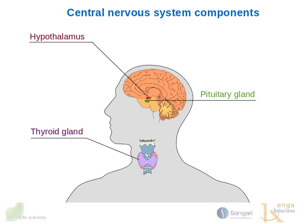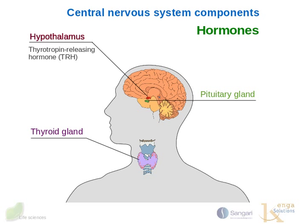Let us first look at the hormones that these three components of the endocrine system produce. The hypothalamus produces thyrotropin-releasing hormone, TRH, and somatostatin. One interesting aspect of TRH is that it is only three amino acids long, making it a fairly small biomolecule.